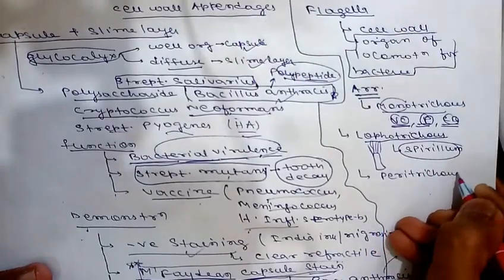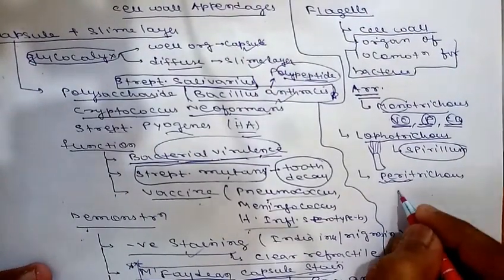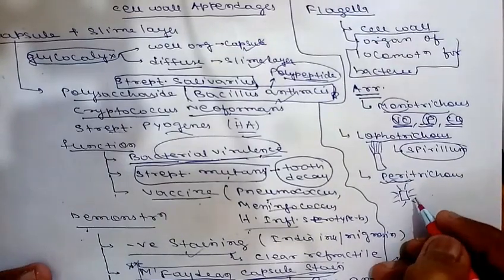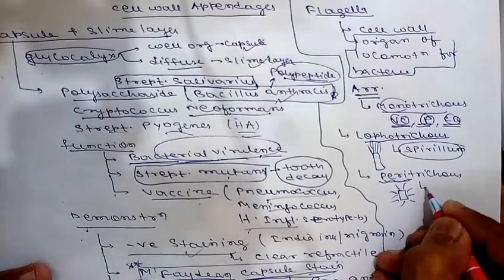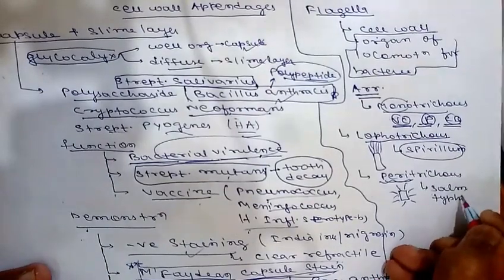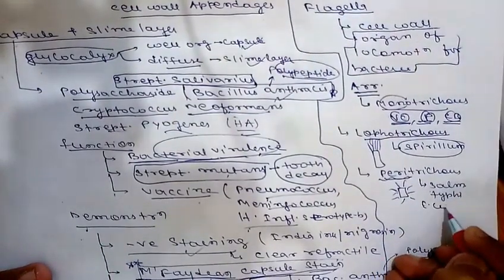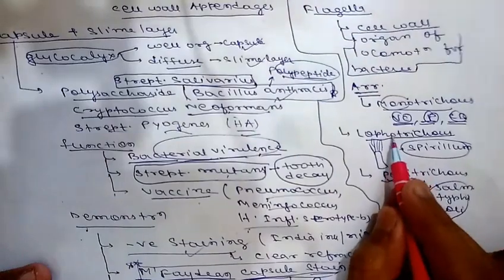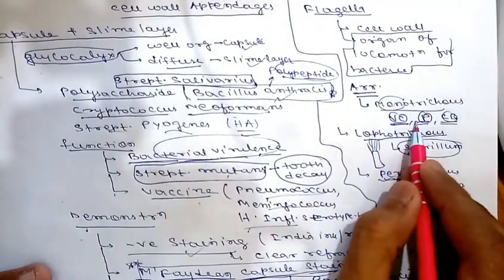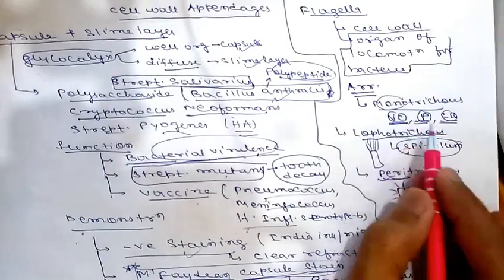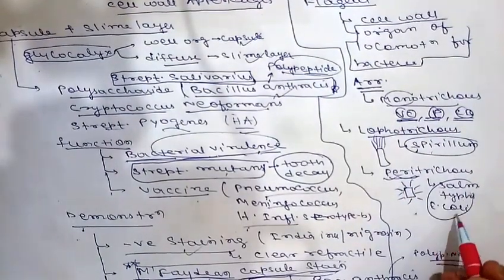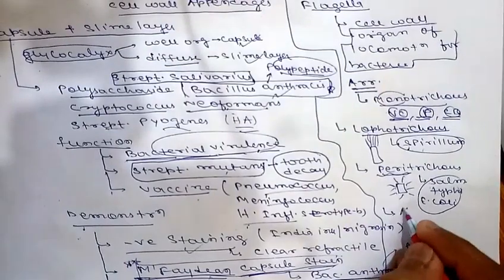The next is peritrichous — flagella surrounding the entire bacterium. This is found in Salmonella typhi and Escherichia coli. So: monotrichous in Vibrio cholerae and Pseudomonas and Campylobacter, lophotrichous in Spirillum, and peritrichous in Salmonella typhi and E. coli.